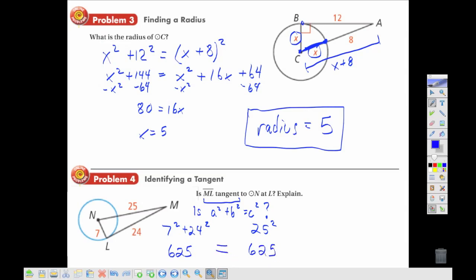So we see that they're equal, which means a squared plus b squared is equal to c squared. So the answer is yes, this is a tangent line.